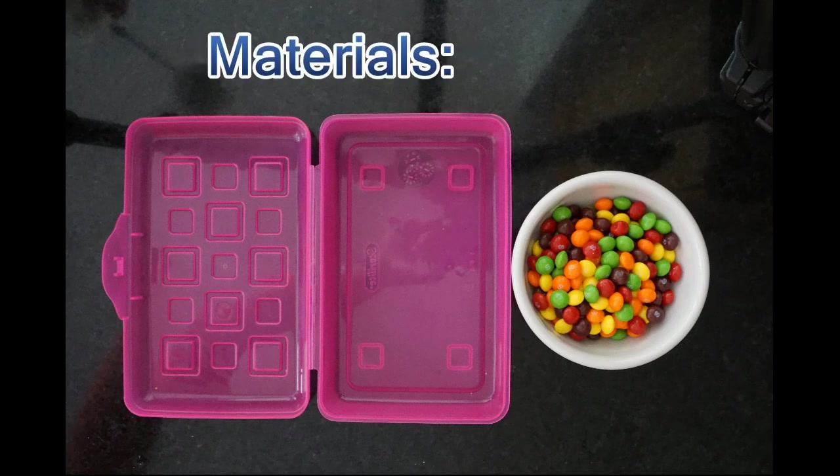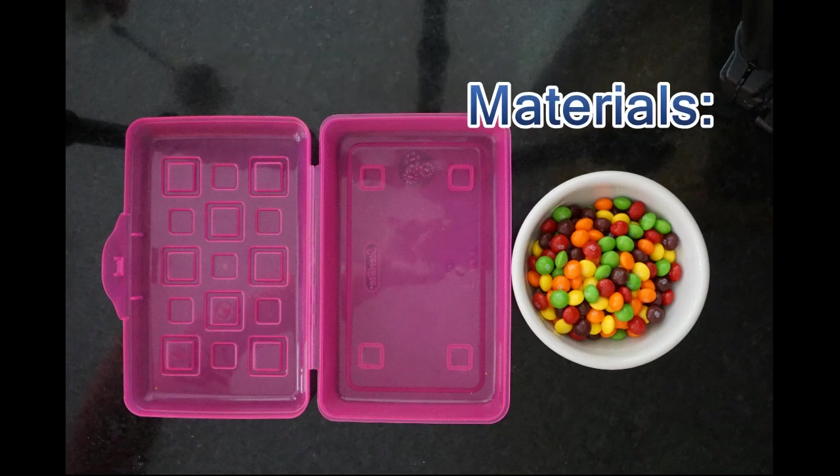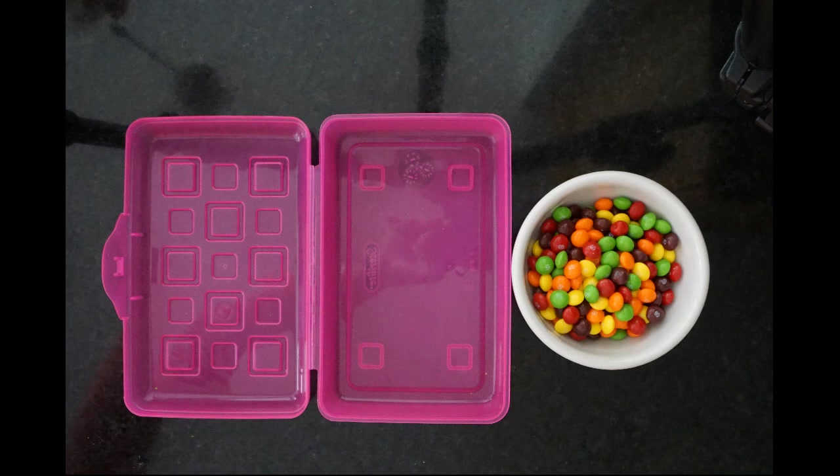The materials you'll need today are a plastic or cardboard shoe box and 200 candies with a letter on one side only. If you can't find those or don't want to buy those, you can use 200 pennies.